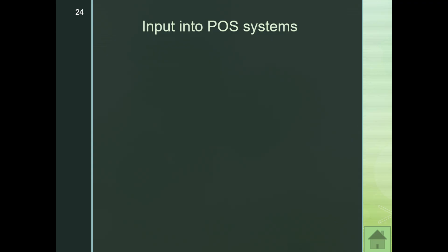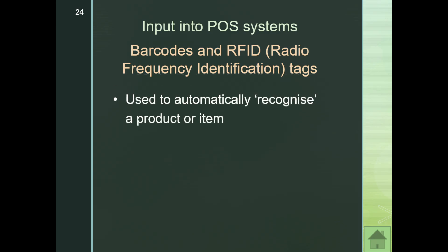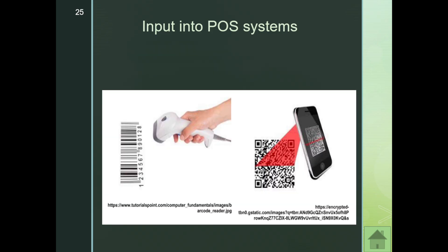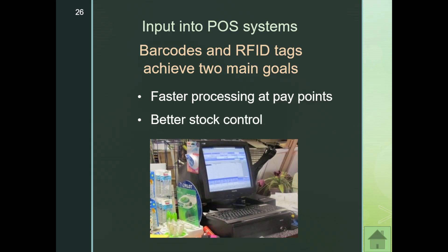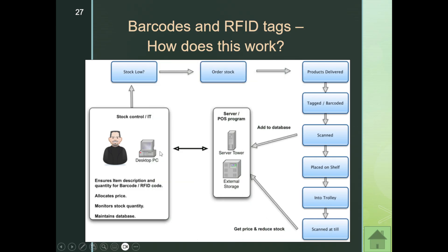Point of sale systems use barcodes and RFID — Radio Frequency Identification — tags to recognize a product or item. The barcode scanner scans the barcode, while RFID tags store data on the tag or card and are detected wirelessly. QR codes are also used. The two main goals are faster processing at paypoints and better stock control — imagine having to look up prices in a book at a toll.